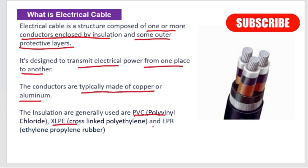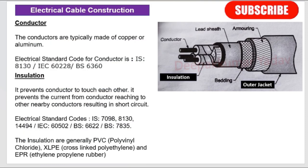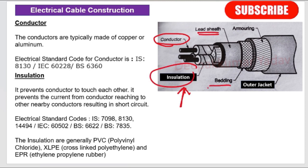The insulation materials generally used are PVC (polyvinyl chloride), XLPE (cross-linked polyethylene), and EPR (ethylene propylene rubber). Now we will study the cable construction. This is the cross-section of the cable. First the conductor, then the insulation, then the lead sheath, then the bedding, then the armoring, and the last outer layer is the outer jacket.